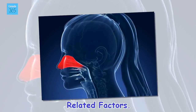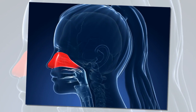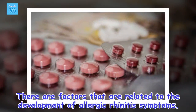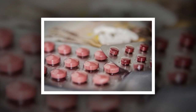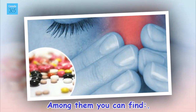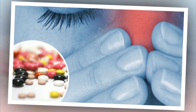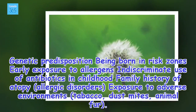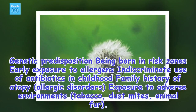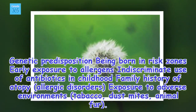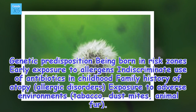Related factors. There are factors that are related to the development of allergic rhinitis symptoms. Among them you can find: genetic predisposition, being born in risk zones, early exposure to allergens, indiscriminate use of antibiotics in childhood, family history of atopy and allergic disorders, exposure to adverse environments, tobacco, dust mites, and animal fur.